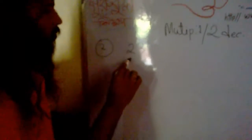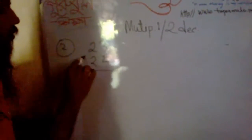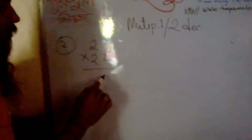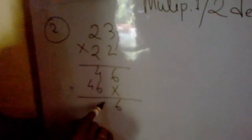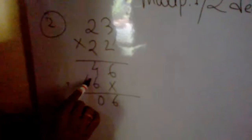Two decimal place number example: 23 times 22 multiplication. We used to do like this: 2 into 3 is 6, 4 plus 6, 4, then we add, then we get 5 0 6. This answer is okay.